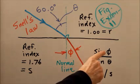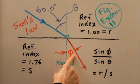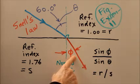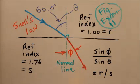Then Snell's Law tells us that the sine of the angle of refraction, that's this angle, divided by the sine of the angle of incidence, that's this angle right here, equals R over S.